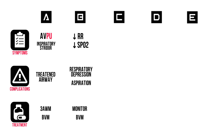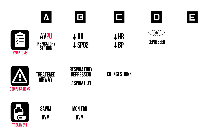In C: bradycardia and hypotension, but they rarely cause complications on their own. Beware of co-ingested medication that could cause cardiac arrhythmias. In D: pupil size is normal. The patient has a depressed mental status and could therefore lose their respiratory drive, so monitor B.